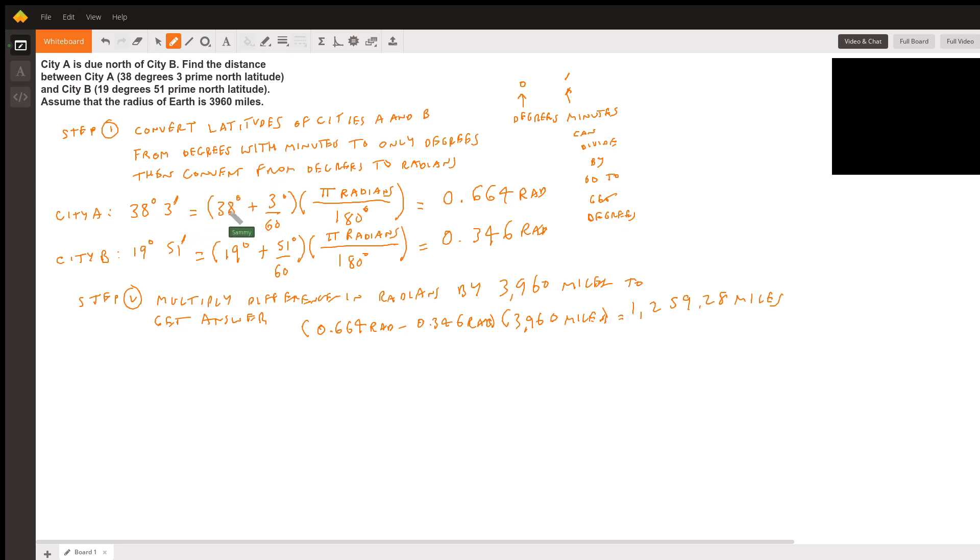We have 38 degrees plus 3 divided by 60, now it's all degrees. Then we need to convert the degrees to radians, so multiply that by pi radians over 180 degrees. The degrees will cancel out and we'll get radians. We do the math and we're going to get 0.664 radians for City A.